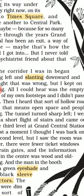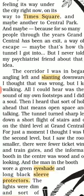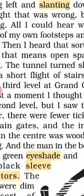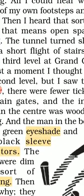The next word is 'slanting.' Slanting means taking a path with twists and turns. The next word is 'eye shade.' An eye shade is basically a cover to protect eyes against strong sunshine. You must have seen people using such covers to protect their eyes from strong sunshine.